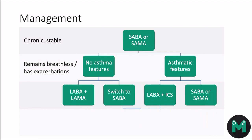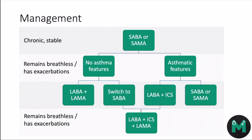If they're on a SAMA, you want to switch them over to a SABA. If they do have asthmatic features, you can start them on a LABA and inhaled corticosteroid combination, such as seretide, alongside a SABA or SAMA. If they're still breathless and having exacerbations, you can put them all together: LABA with an inhaled corticosteroid and a LAMA.